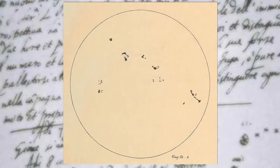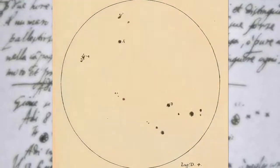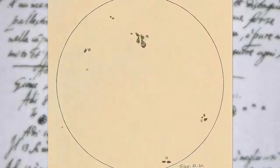His detailed sketches, produced over the summer in 1612, revealed that the sun was not a static orb in the sky, but a dynamic force.